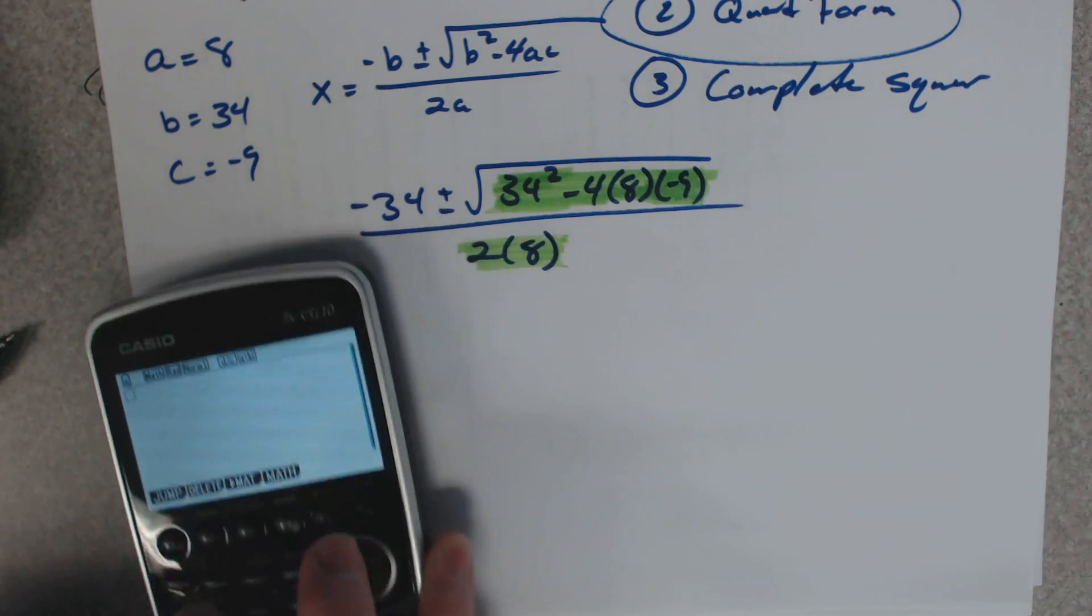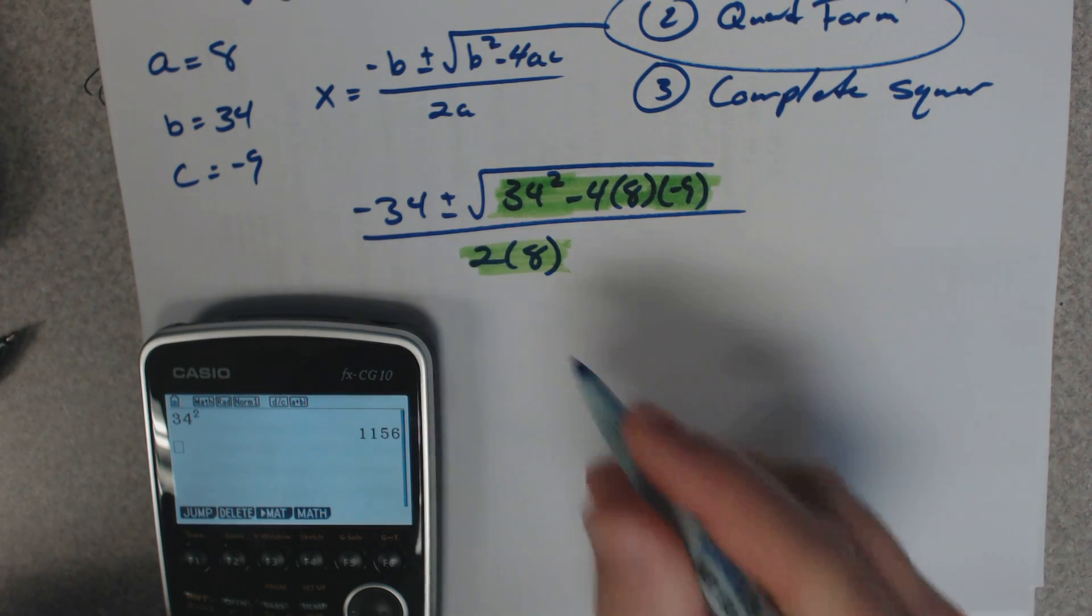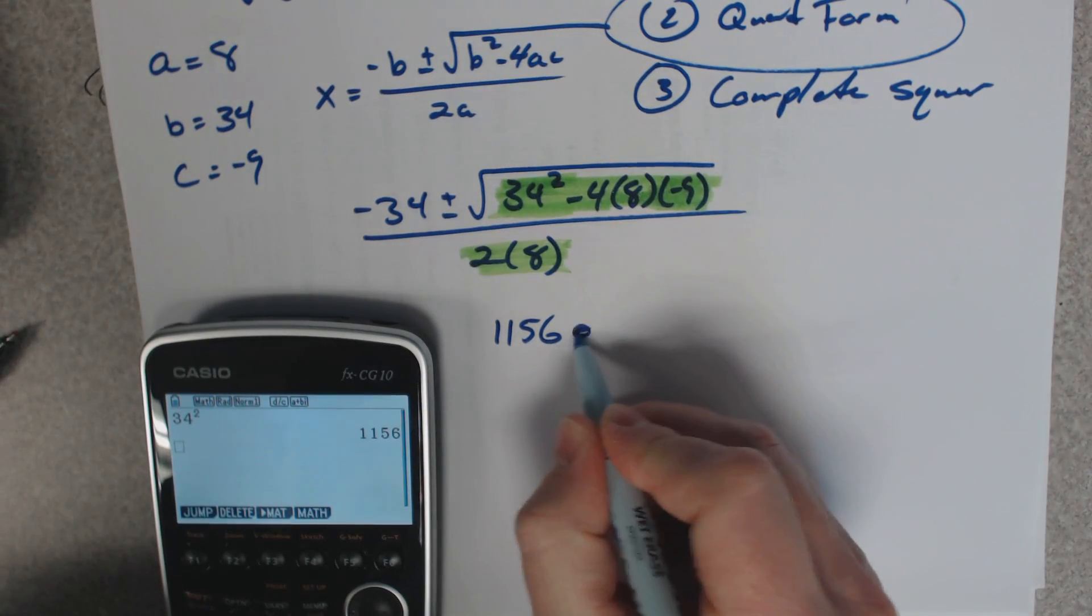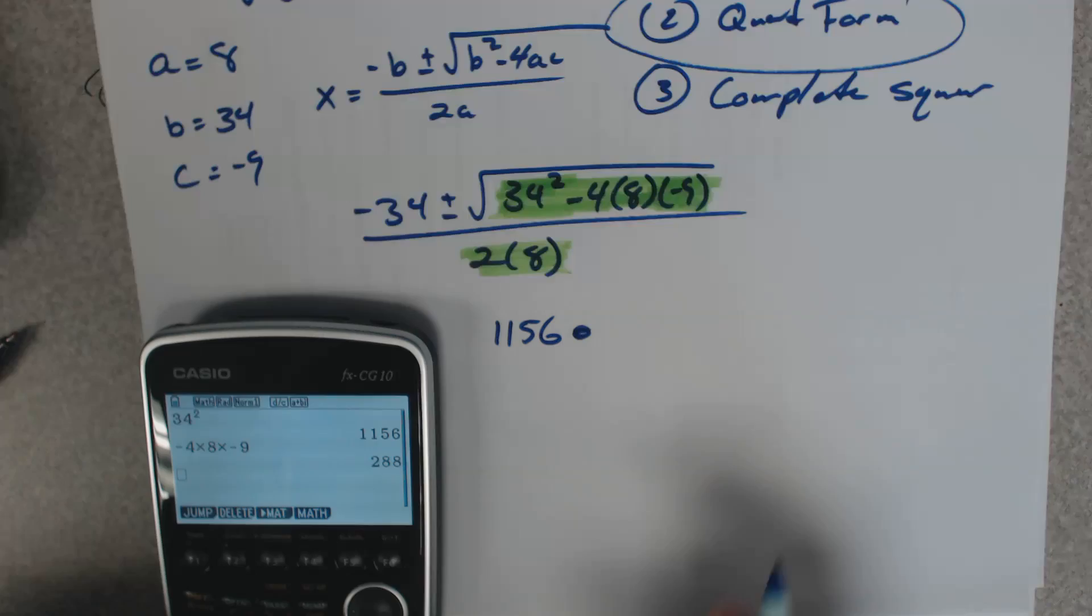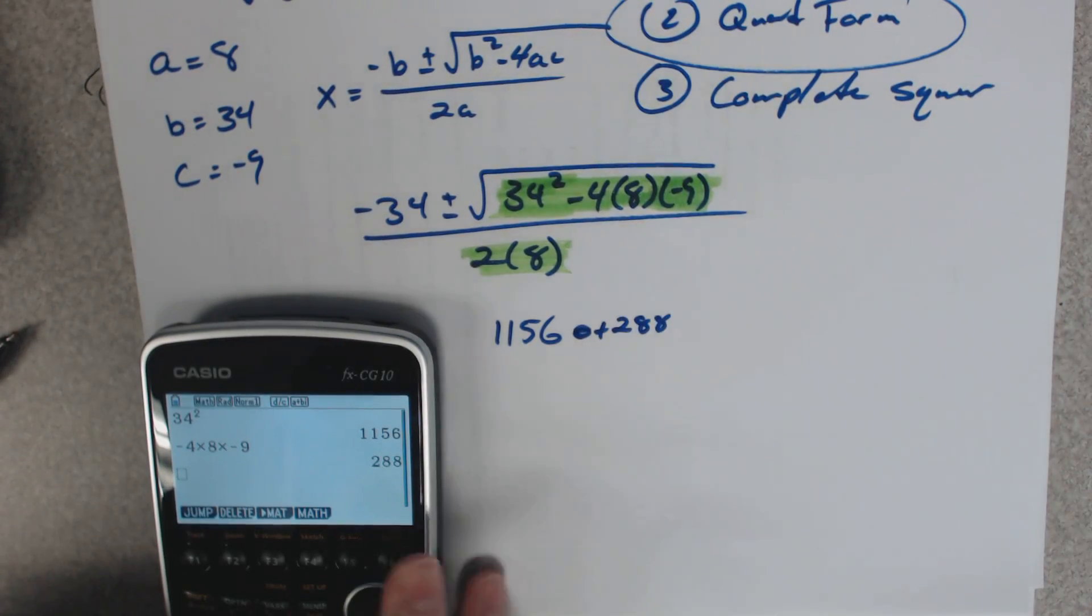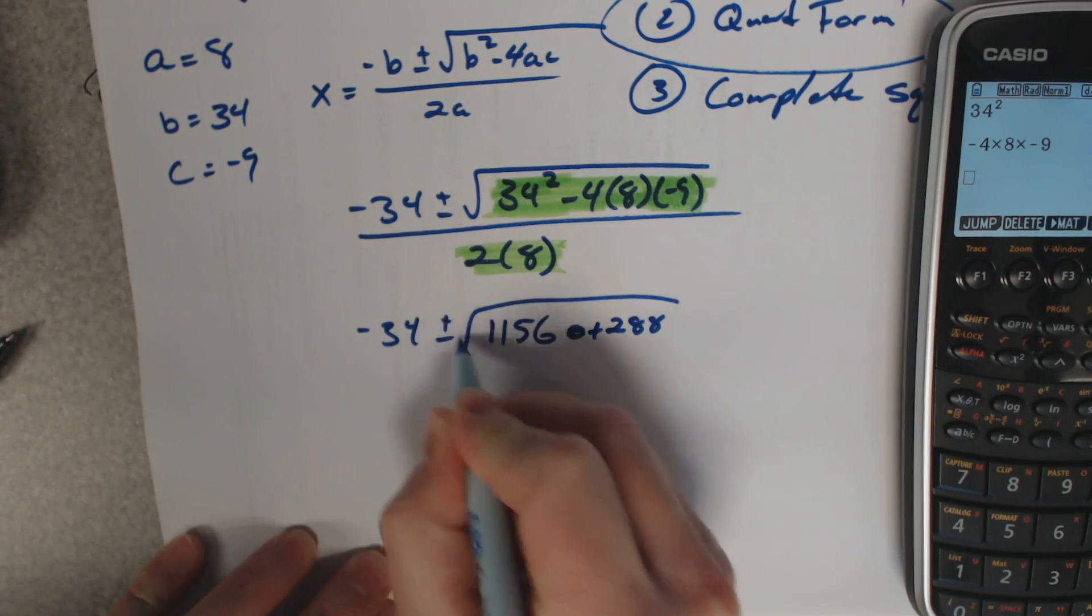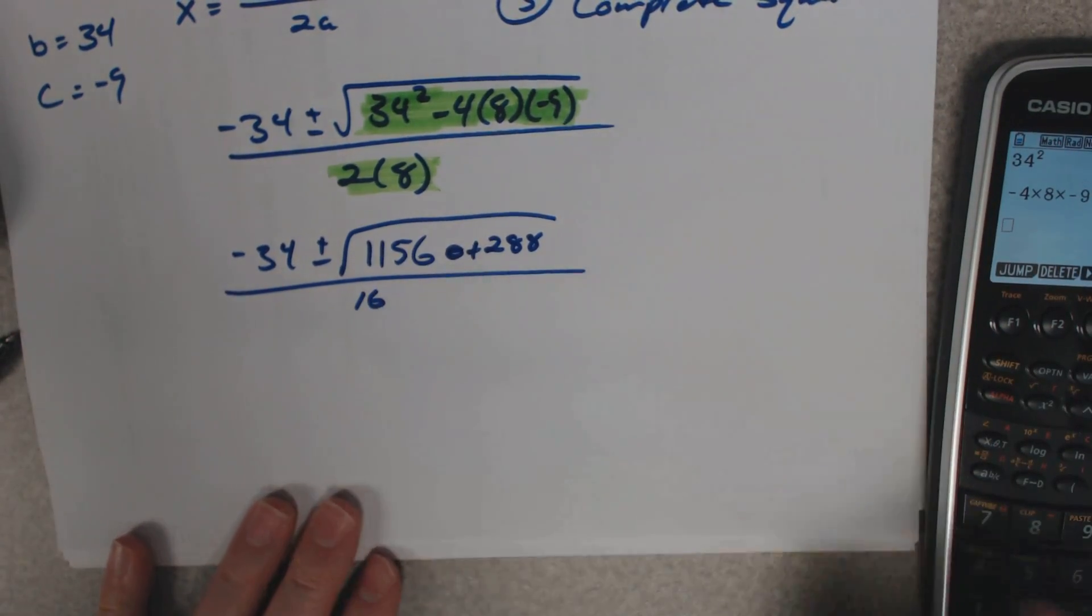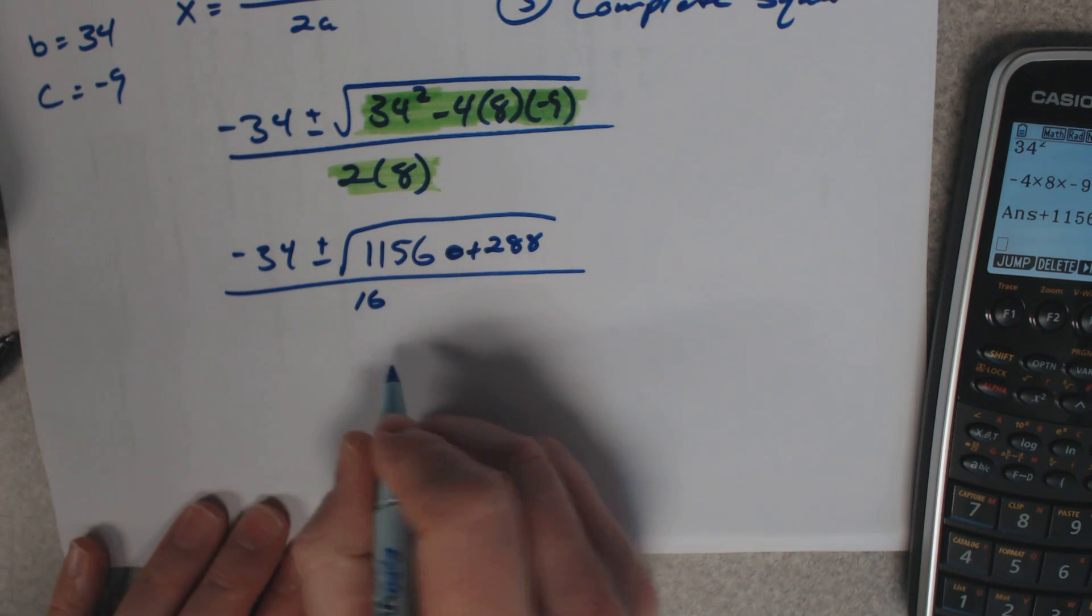So, 34 squared is 1156 minus, well actually, negative times a negative is going to be positive. So I'm just going to say negative 4 times 8 times negative 9 is a positive 288, and 2 times 8 is 16. So I'm going to show my work here. I'm just trying to show my work. Let's add these two values together. I get 1444.